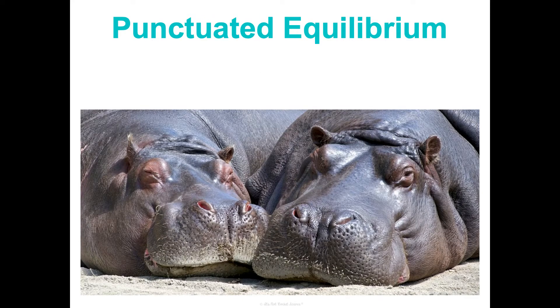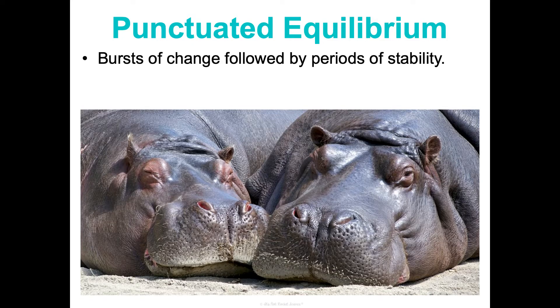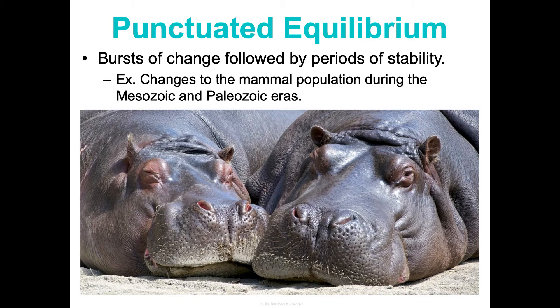The opposite of gradualism is punctuated equilibrium — bursts of change followed by periods of stability. There's a ton of change, and then a stretch of stability. The best example is how the mammal population changed throughout the Mesozoic and Paleozoic eras, when the big five mass extinctions occurred, wiping out species and causing new ones to arise and flourish, followed by stability before the next event. That's how mammals really changed a lot during that time.